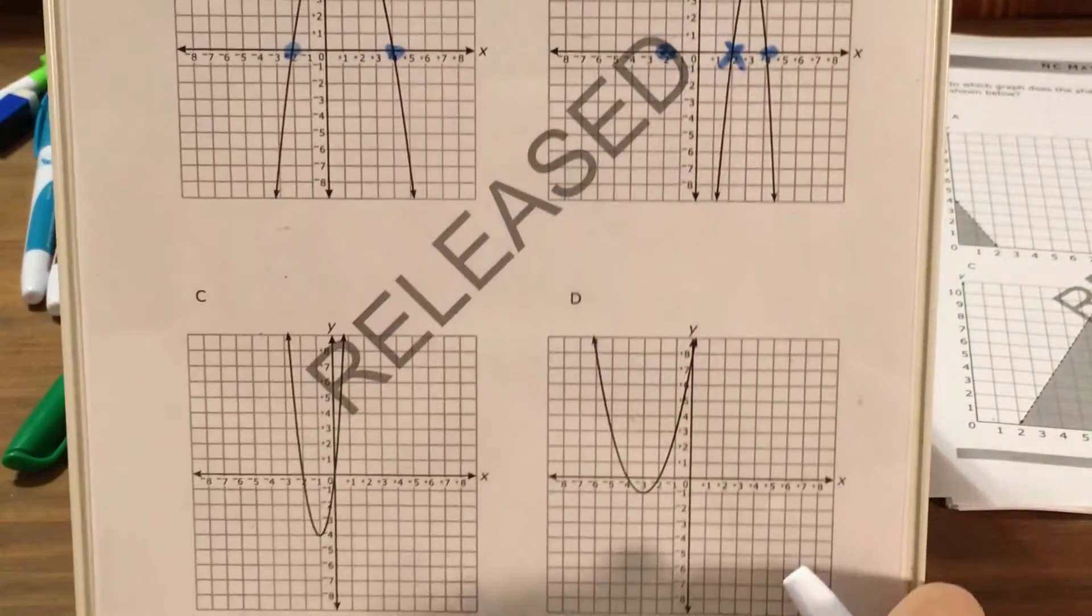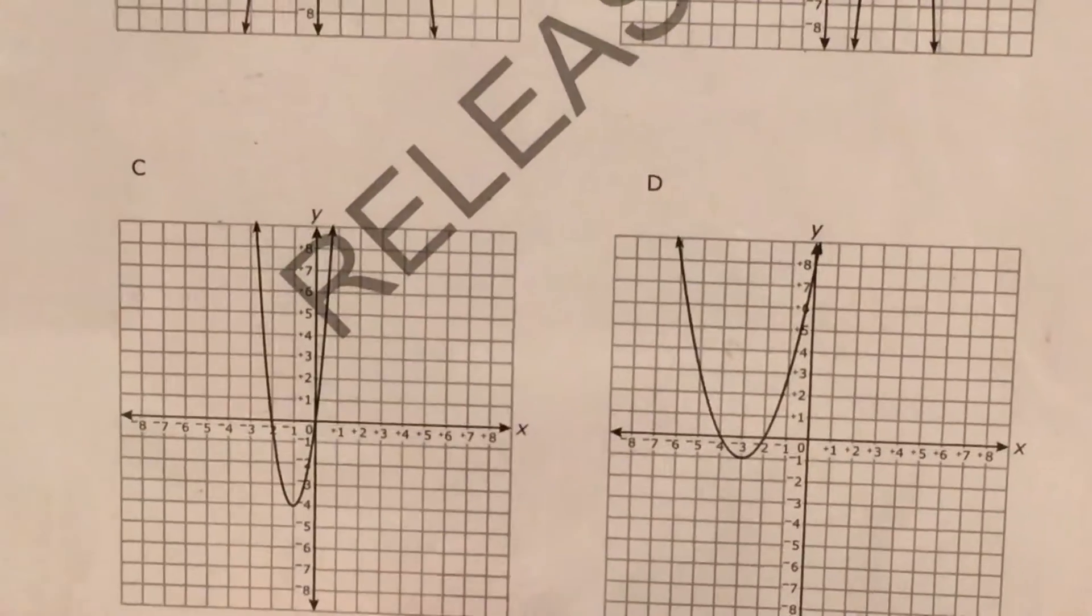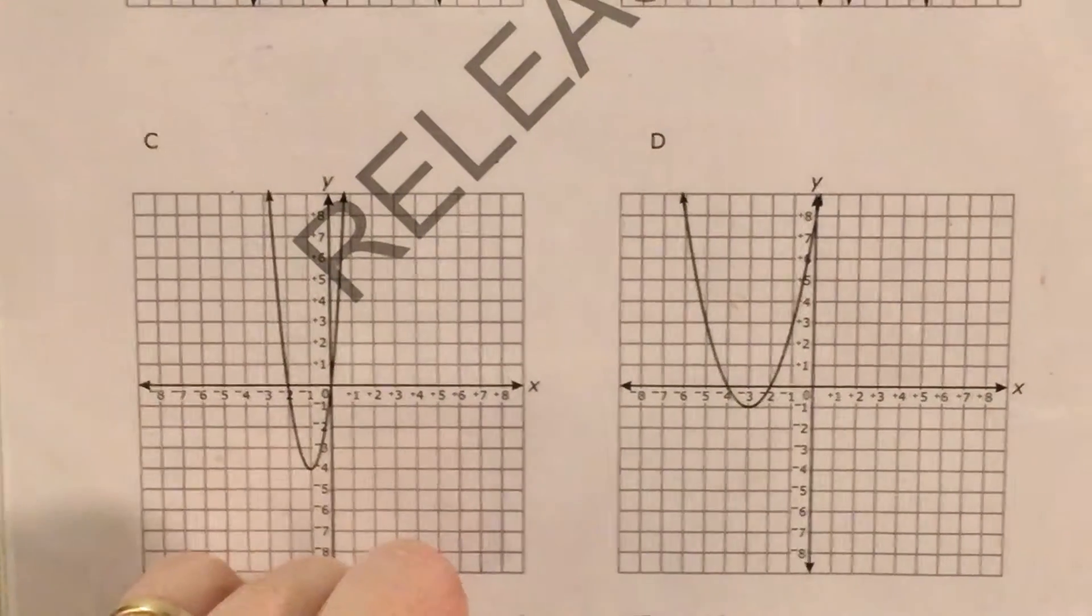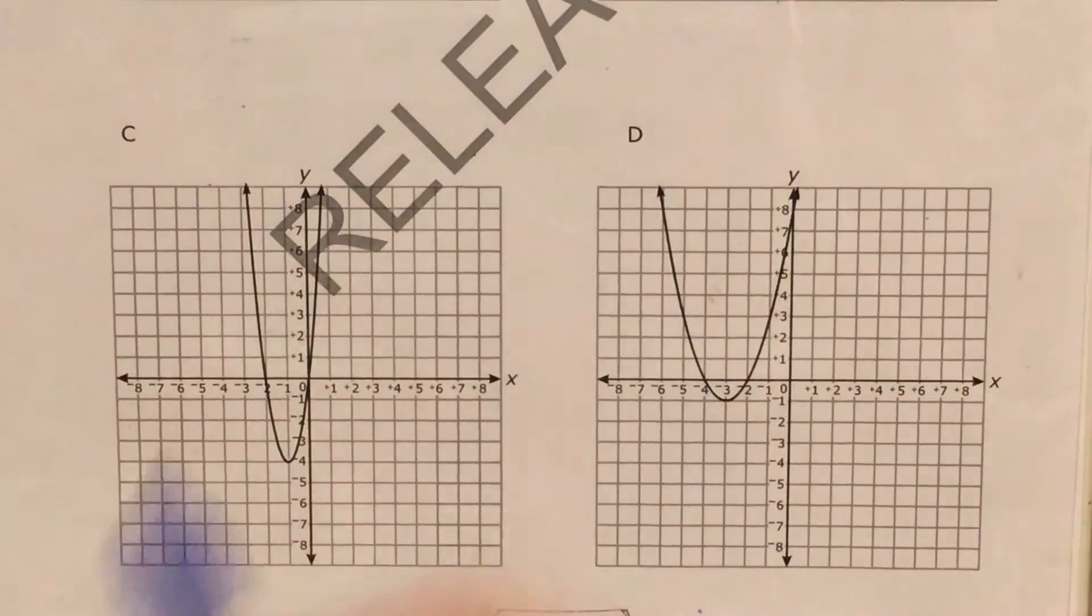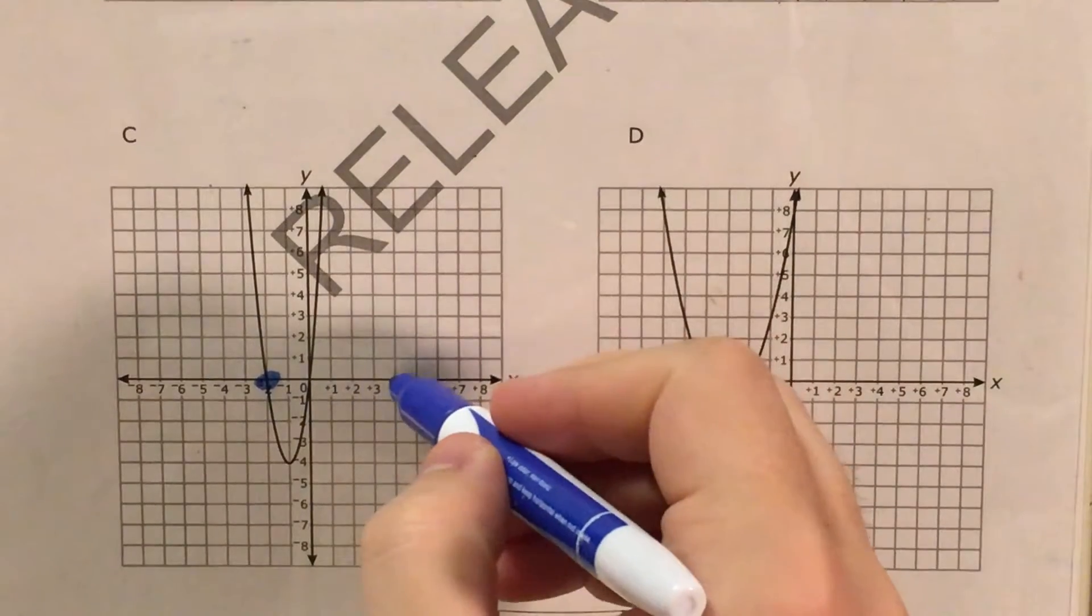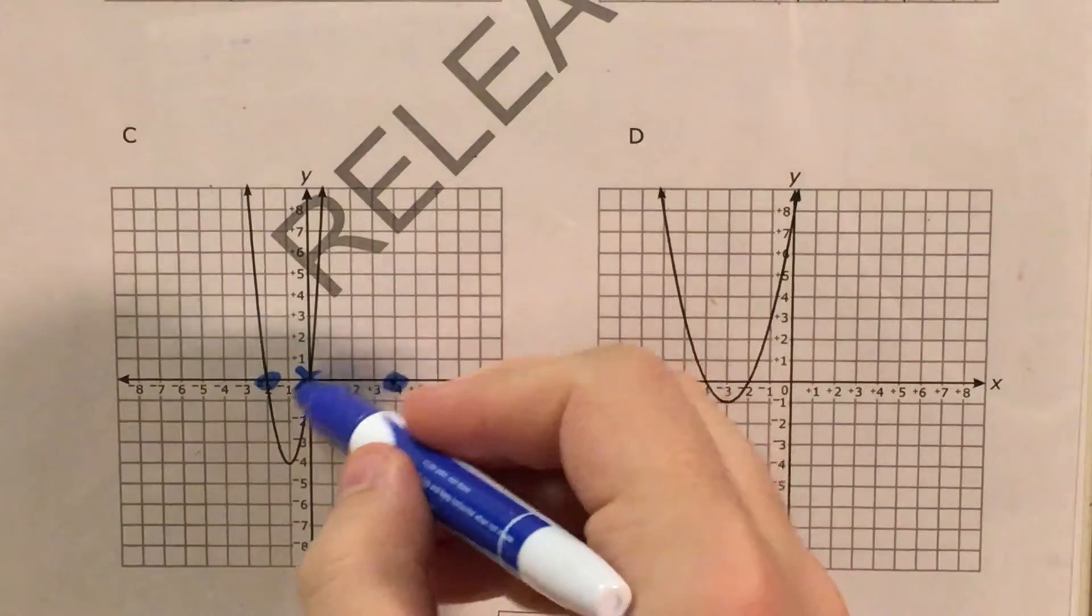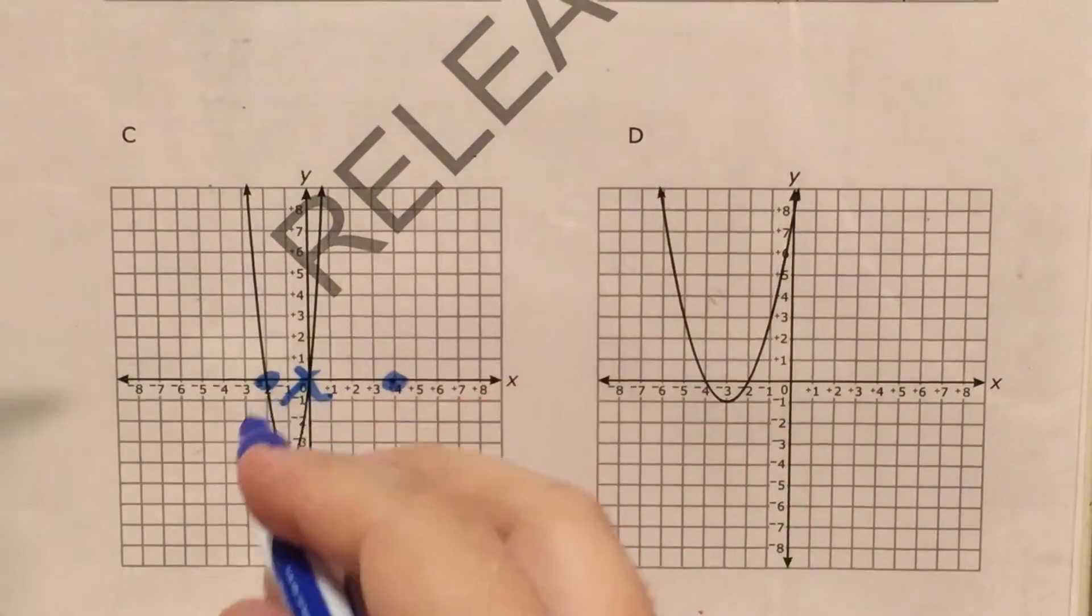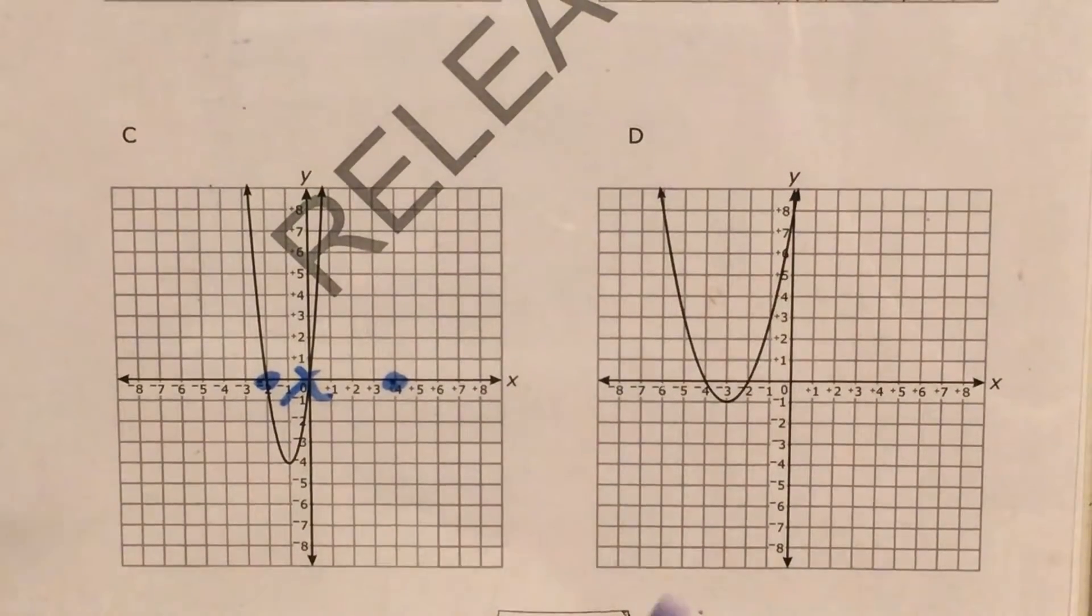So, I move on and try out choice C and choice D. Let me zoom in on those. For choice C, I have a 0 at negative 2. I don't have one at negative 4, and I do have one at 0. So, once again, just like with choice B, one of my zeros was not in the right place.